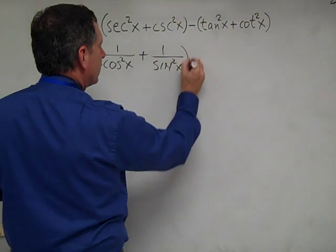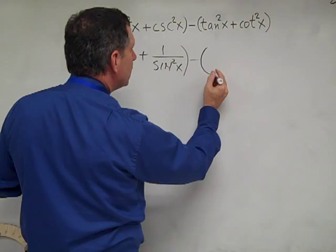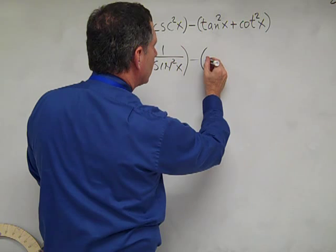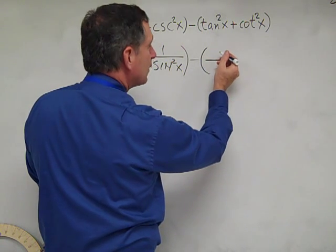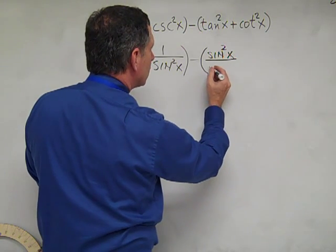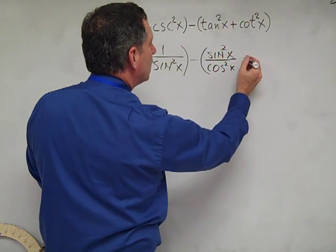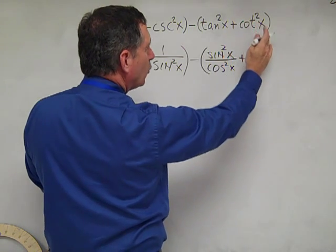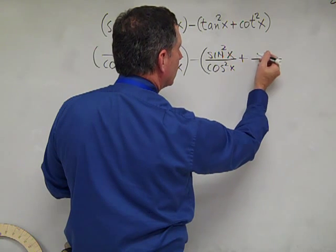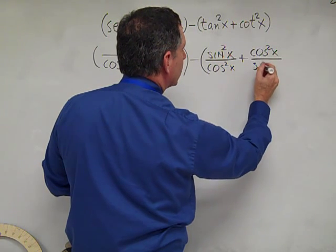We'll keep the first part in parentheses and then use the tangent and cotangent identities for the second group. The tangent identity is tangent x equals sine x over cosine x, so tangent squared x is sine squared x over cosine squared x. Cotangent is just the reciprocal of tangent, so cotangent squared x is cosine squared x over sine squared x.